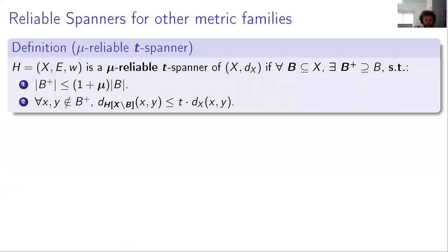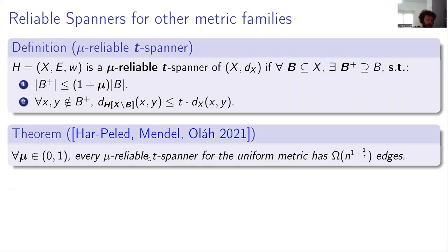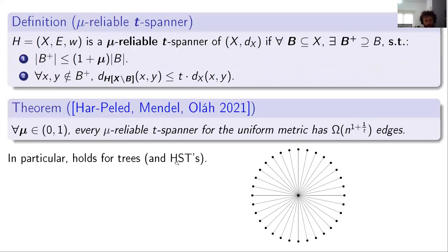We constructed reliable spanners for Euclidean and doubling metrics, but what about other spaces? Unfortunately, Har-Peled and Ola showed it is hard. Even for the very basic uniform metric — where all distances are one — every mu-reliable T-spanner must have at least n^(1+1/T) edges, which is polynomial for every T smaller than log n. So to get a linear number of edges one must have stretch log n. This lower bound applies even to trees and HSTs, since the metric induced on the leaves of a star is uniform.